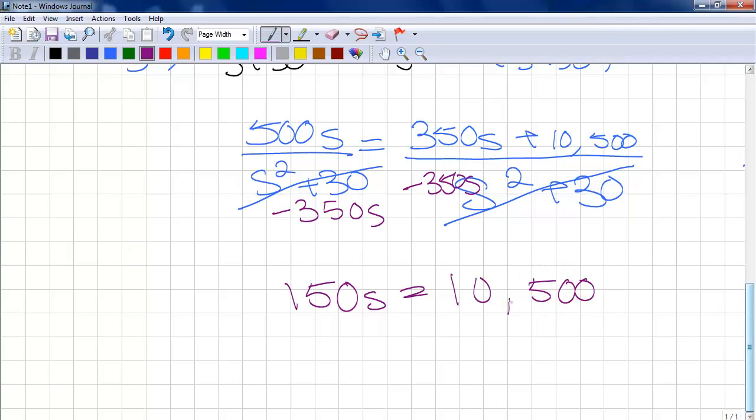In order to solve the equation, we can then divide both sides by 150, which gives us S is equal to 70 kilometers per hour.